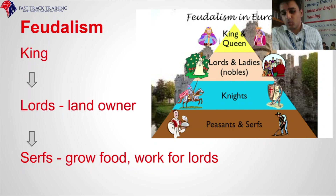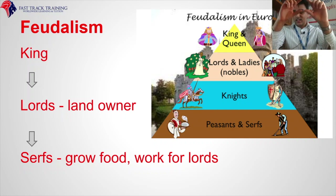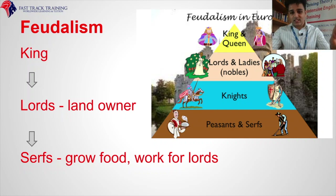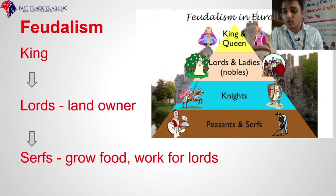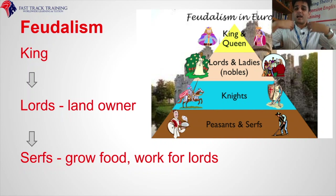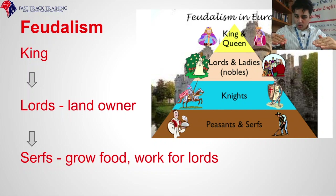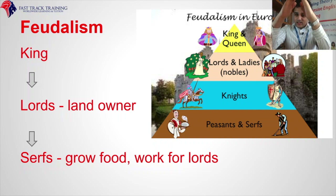Let's talk about feudalism. Feudalism is a system of land ownership where the king sits at the top. You have the lords and ladies, the knights, and then the peasants and servants. It goes like a triangle — at the top you have the king, at the bottom you have the servants. Servants grow the food and work for the lords. The lords give food and money back to the king. A bit like nowadays — you work a job, pay your taxes to the government.